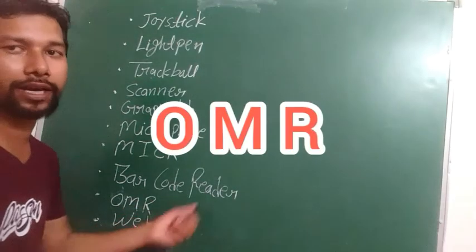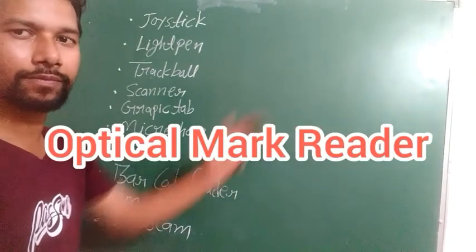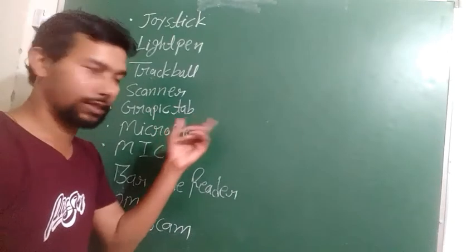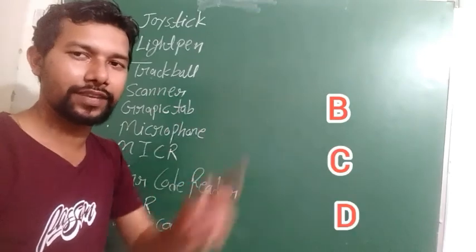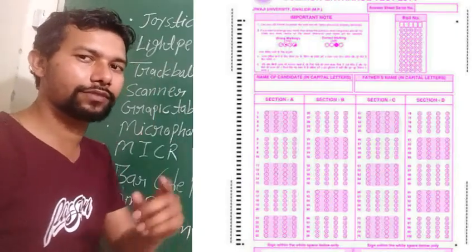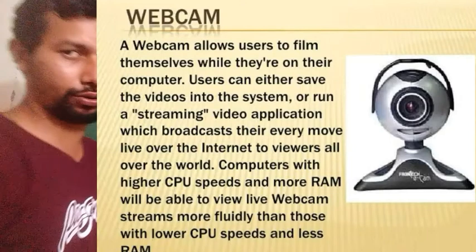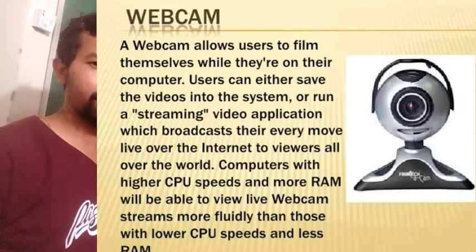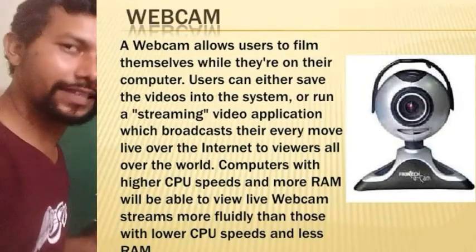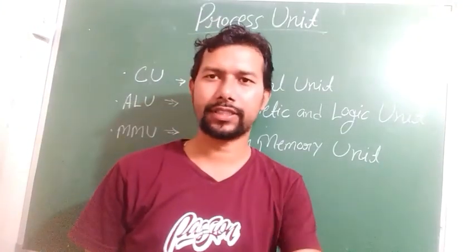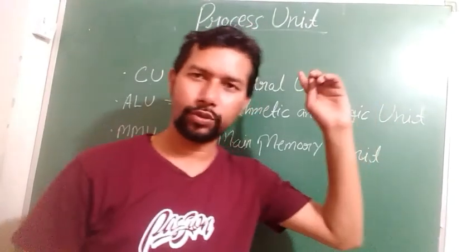OMR stands for Optical Mark Reader. It is used for multiple choice questions — when you do an exam and choose one option from A, B, C, or D, OMR is used for checking. The last input device is webcam, which is a digital camera used for video conferencing and video calling over the internet.